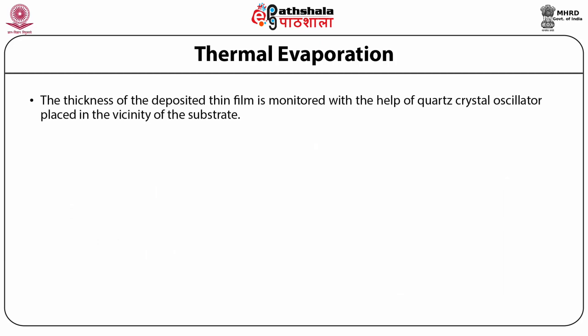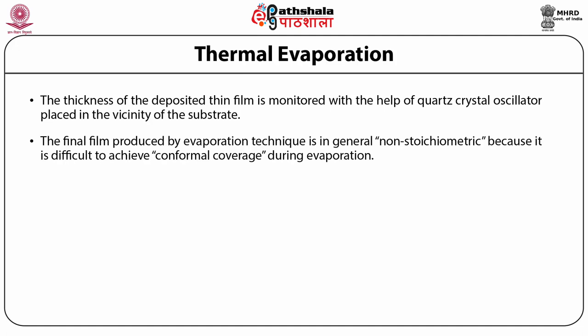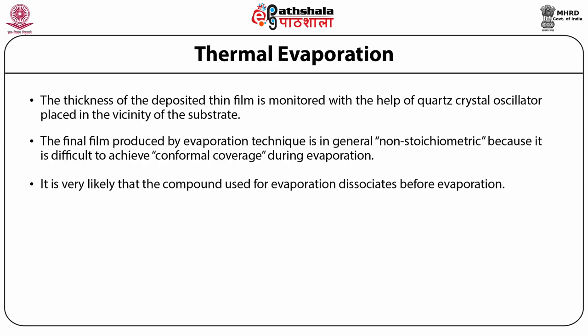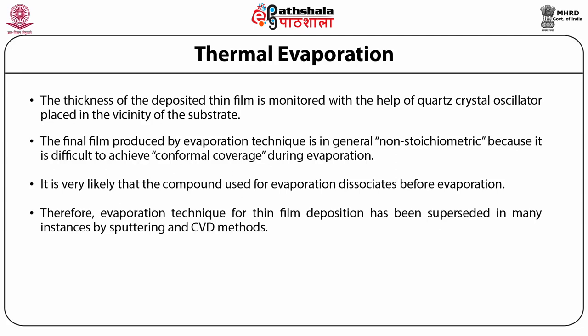The thickness of the deposited thin film is monitored with the help of a quartz crystal oscillator placed in the vicinity of the substrate. The final thin film produced by evaporation technique is in general non-stoichiometric because it is difficult to achieve conformal coverage during evaporation, and it is very likely that the compound used for evaporation dissociates before getting evaporated. Therefore, evaporation technique has been replaced in many instances by sputtering and CVD methods.